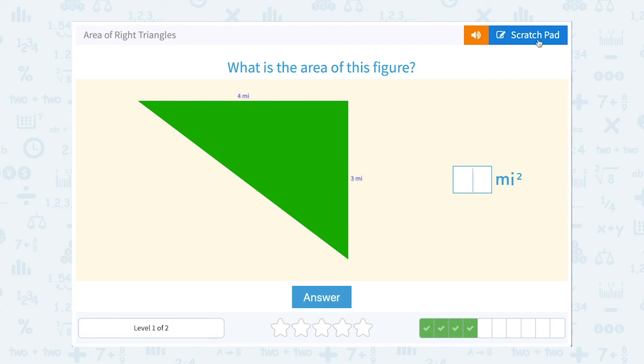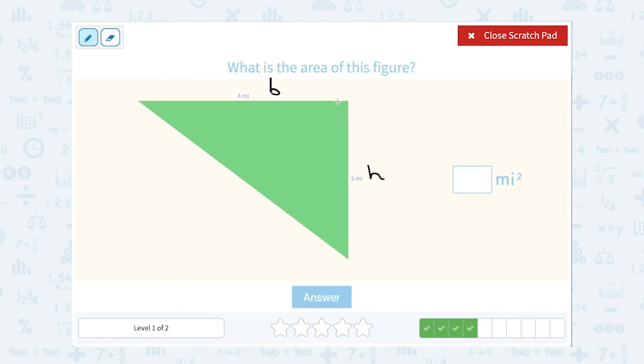What is the area of this figure? Well the two sides that would represent the base and the height are the two that make up our 90 degree angle. And then we can say our area is equal to one half the base times the height.